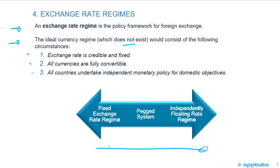In reality, there's a range of regimes. Starting on the left-hand side, a fixed exchange rate regime; in the middle, a peg system; and on the right-hand side, an independently floating rate regime.